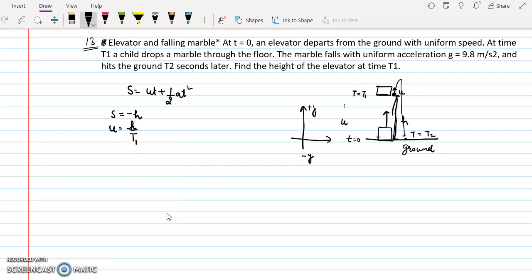And what is the time? The time the stone takes from throw to reaching the ground is just t2 - t1, because at t=t2 it reaches and at t=t1 we have thrown. So time of flight of the stone is t2 - t1.